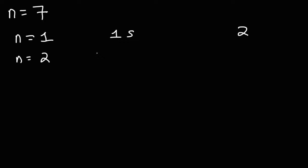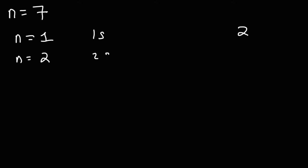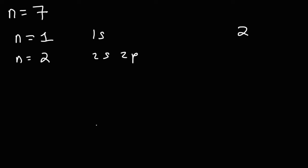When n is 2, you could have the 2s orbital and the 2p orbital. p can hold up to 6 electrons, s can hold up to 2. So you can get a maximum of 8 electrons in the second energy level.